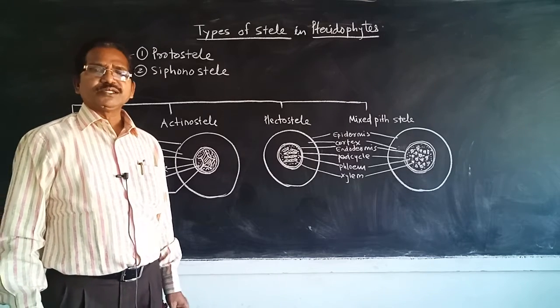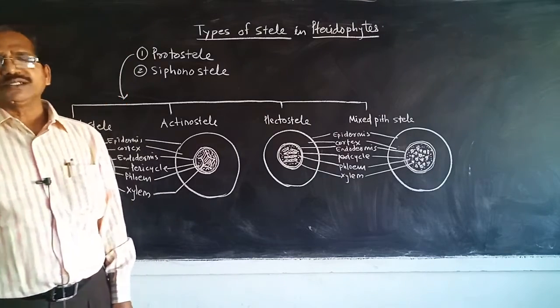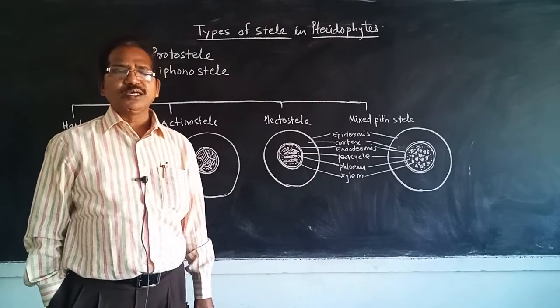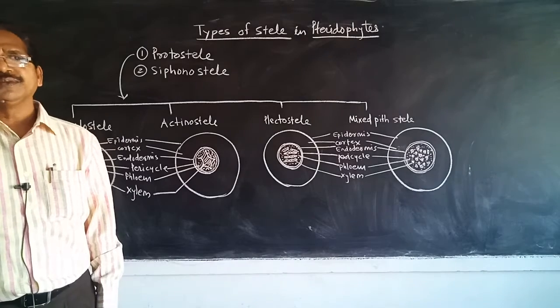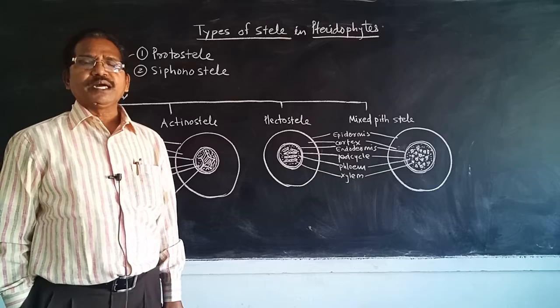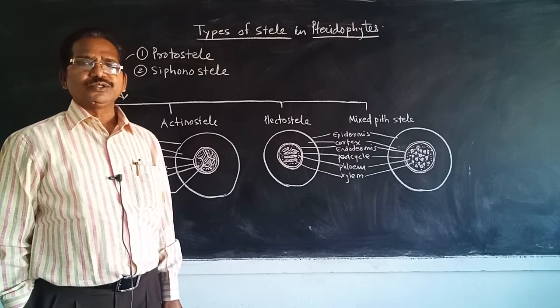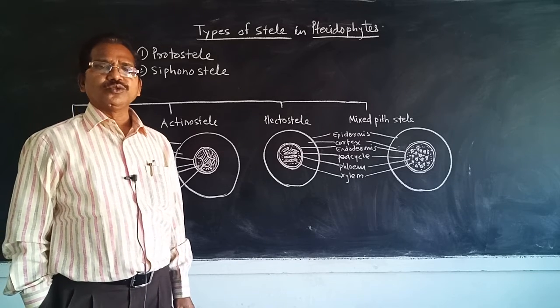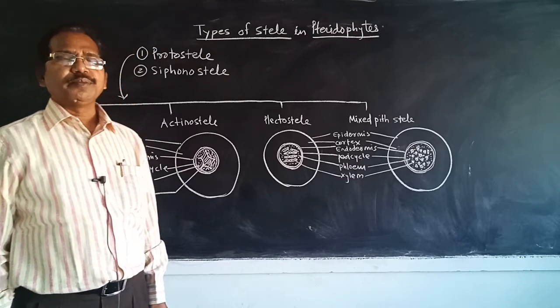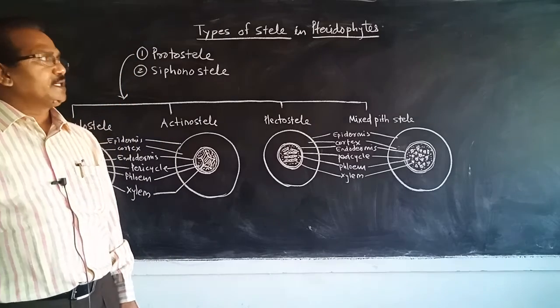What is the function of xylem? Xylem conducts water from the roots to the aerial part of the plant body, while the phloem conducts food material prepared by the green parts of the plant, i.e., leaves and green stem, to the other parts of the plant body.